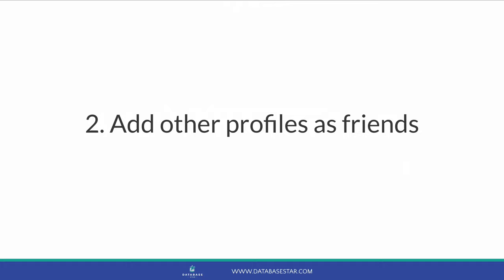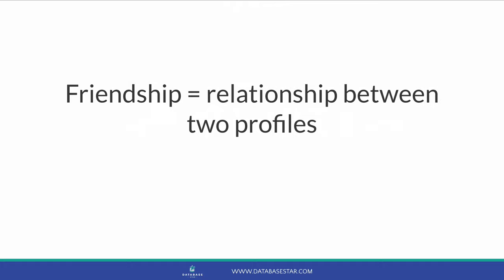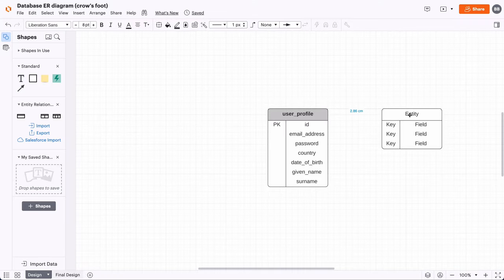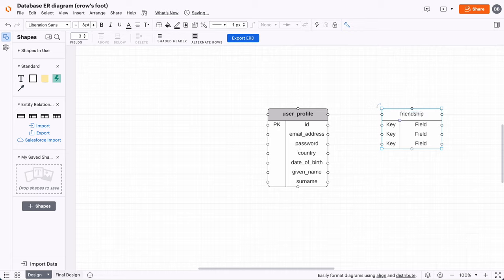The next feature was the ability to add other profiles as friends. A friendship is a relationship between two profiles. There's a concept called a self-join which allows you to join a record to another record of the same table — useful for hierarchical relationships. However, using a self-join will only allow a single friend, and we want users to be able to have many friends. This is a many-to-many relationship. To accomplish this, we add a joining table called 'friendship'.